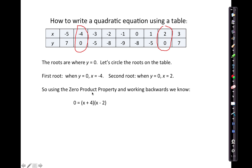So using the zero product property and working backwards, we now know that we can make this equation where 0 equals x plus 4 times x minus 2.